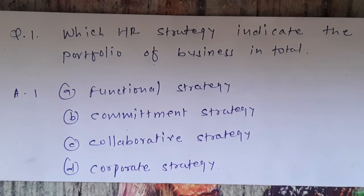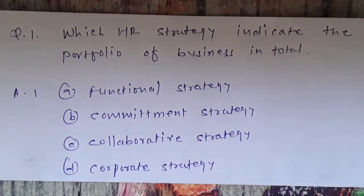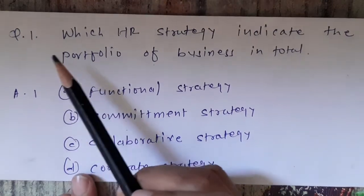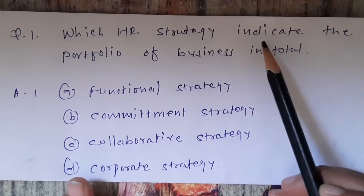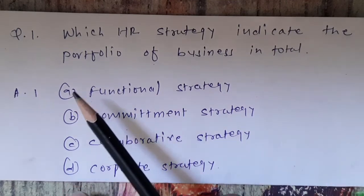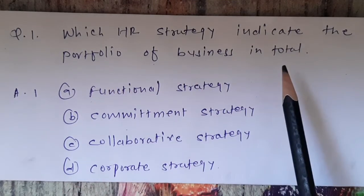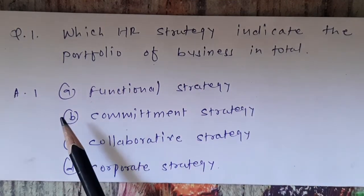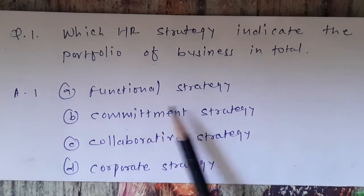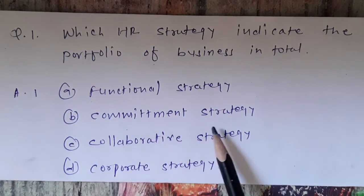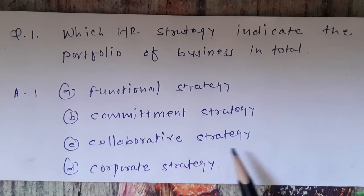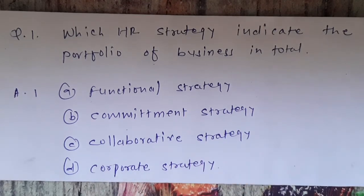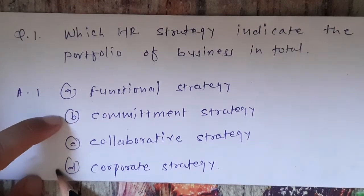Hello friends, welcome to my channel Commerce Knowledge. In today's video we see the MCQ of Unit 1 HRM. Question 1: Which HR strategy indicates the portfolio of business in total? Options are: A) Functional strategy, B) Commitment strategy, C) Collaborative strategy, D) Corporate strategy. The correct option is D, Corporate strategy.